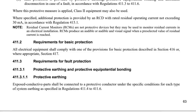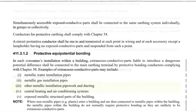Regulation 411.3.1.1 states that exposed conductive parts shall be connected to a protective conductor under the specific conditions for each type of system of earthing as specified in sections 411.4 to 411.6. Also, conductors for protective earthing shall comply with chapter 54 in BS7671.